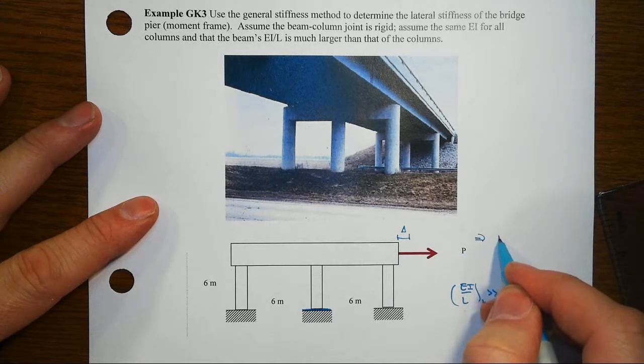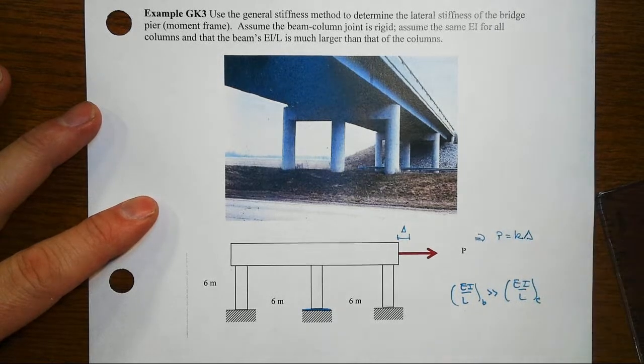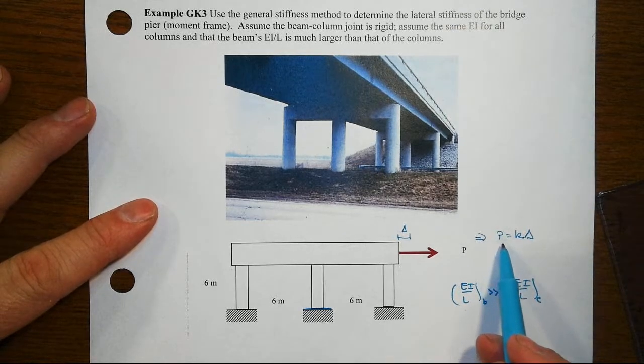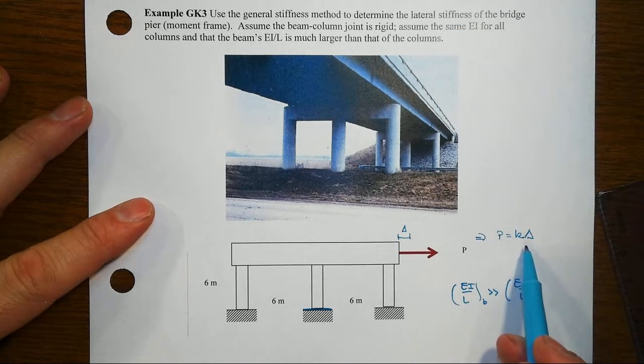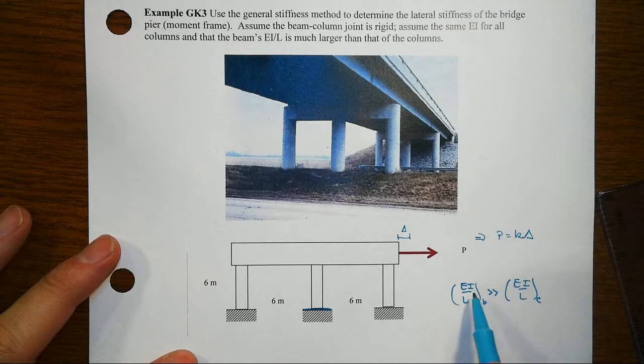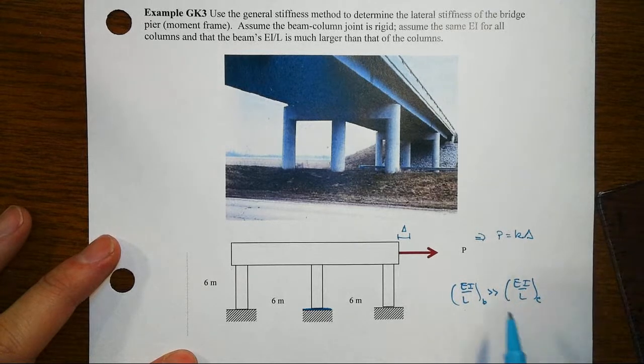And so this very simplistic view of things, capturing the essence of it in this kind of fashion, it's helpful to say okay, EI over L of the beam much greater than EI over L of the column. We essentially have a rigid beam, meaning when this thing moves over sideways, then the model that we might be thinking about would look something like this.